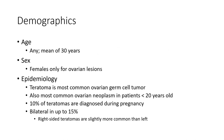Demography: any age, mean of 30 years, female only for ovarian lesion. Epidemiology: teratoma is the most common ovarian germ cell tumor and the most common ovarian neoplasm in patients less than 20 years old. 10% of teratomas are diagnosed during pregnancy. Bilateral in about 15%; right-sided teratomas are slightly more common than left.